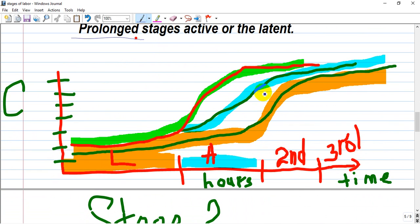For example, if we show normal stage one with a red line: if the latent phase is prolonged, you see it doesn't go up but just extends. If the active phase is prolonged, it's not a rapid increase but just prolonged.